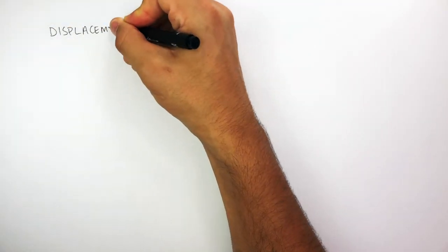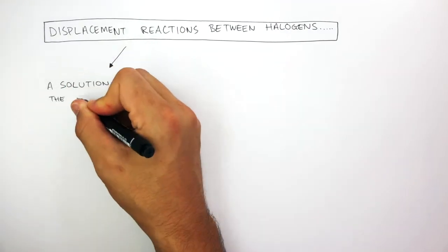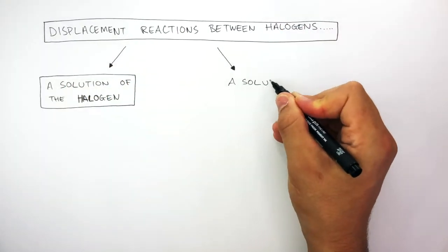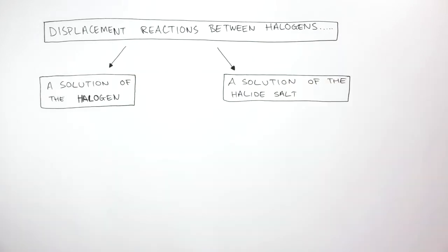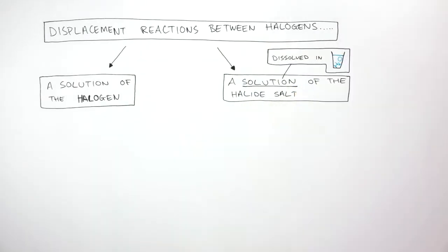Displacement reactions between halogens involve either a solution of the halogen or a solution of the halide salt. Remember, a solution means a substance is dissolved in water. To understand what happens when halogens react, you need to know the colors of halogen solutions and halide salt solutions.